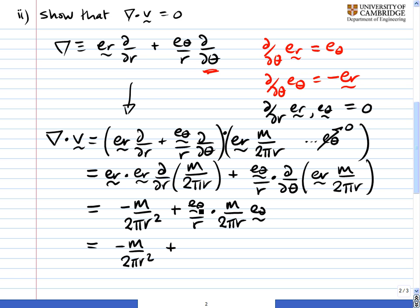plus e_theta dotted with e_theta is 1. This is just m over 2πr squared. Therefore, add the two together and we get 0. So we have confirmed that div v is equal to 0.